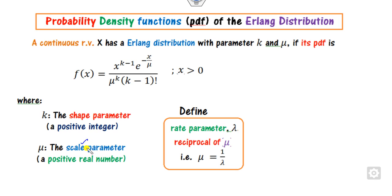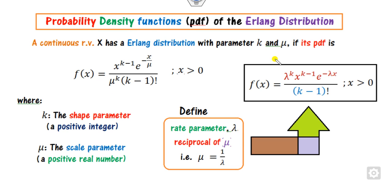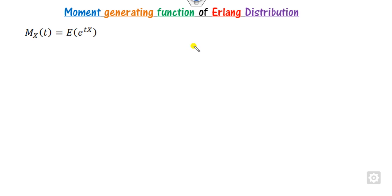If you take the reciprocal of the scale parameter mu, we call it the rate parameter, denoted as lambda. If you substitute the value of mu in terms of lambda into the PDF, you get the second form of the PDF.